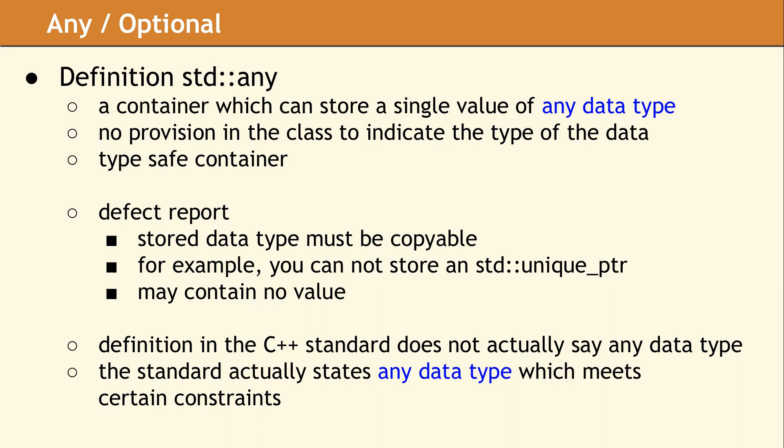An example of one of these constraints is that the data being stored must be copyable. You cannot store a move-only data type, such as std::unique_ptr, in an Any variable. It is worth mentioning that an std::any container can also contain nothing at all, which many definitions overlook.